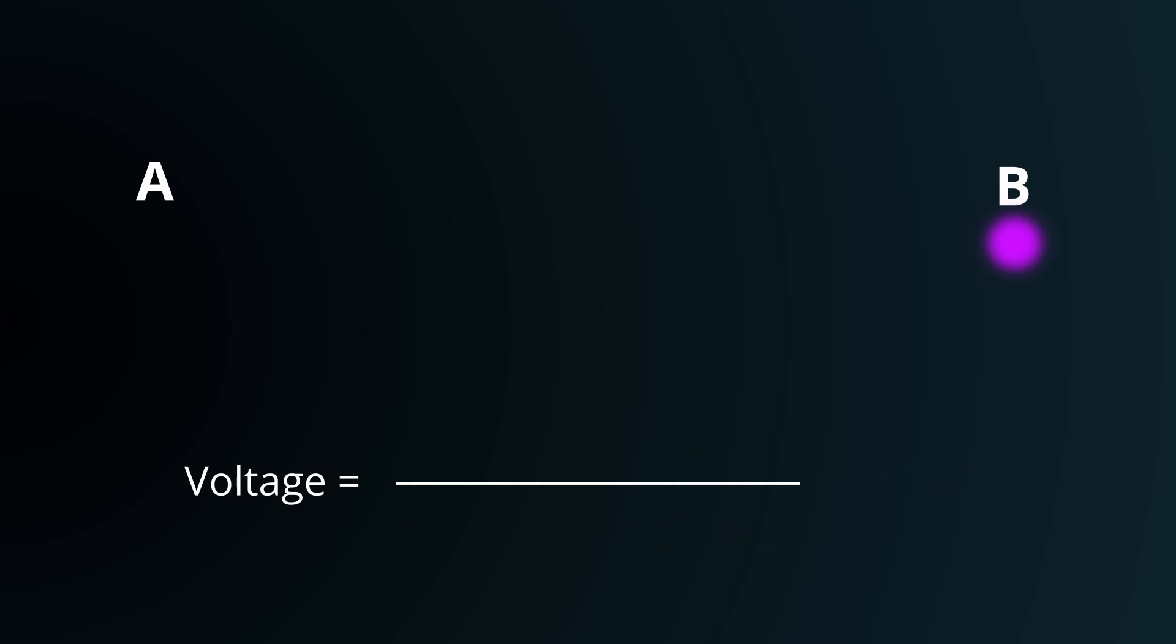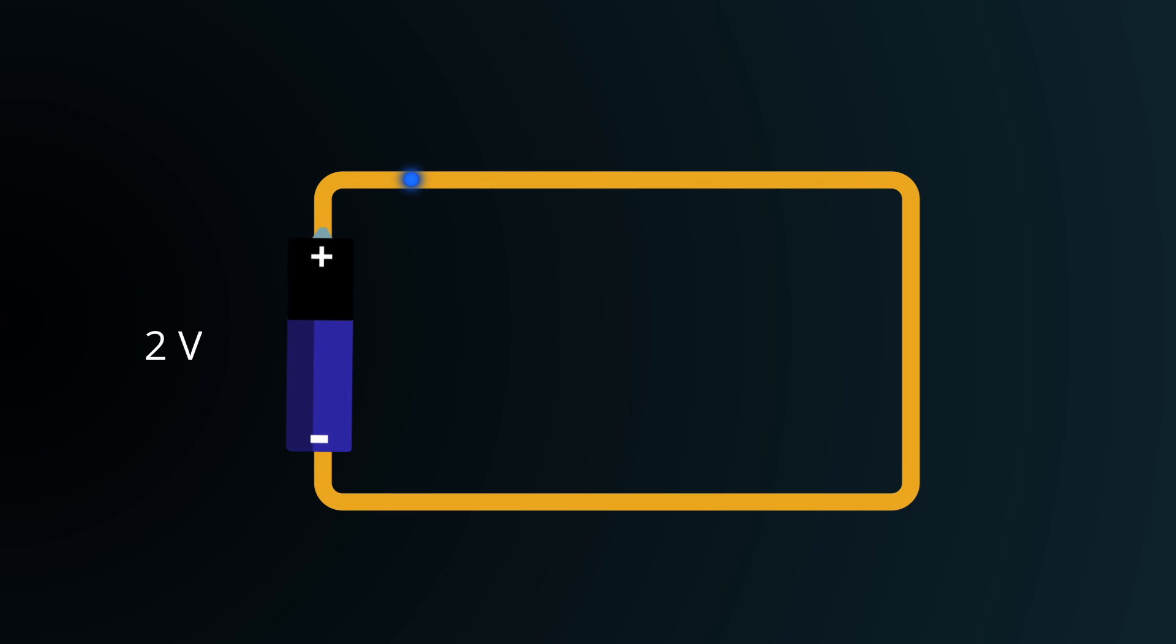Thus, voltage is the work done per unit charge. In practical circuits, voltage doesn't just push charges. It often works against elements that resist this flow, aptly named resistors.